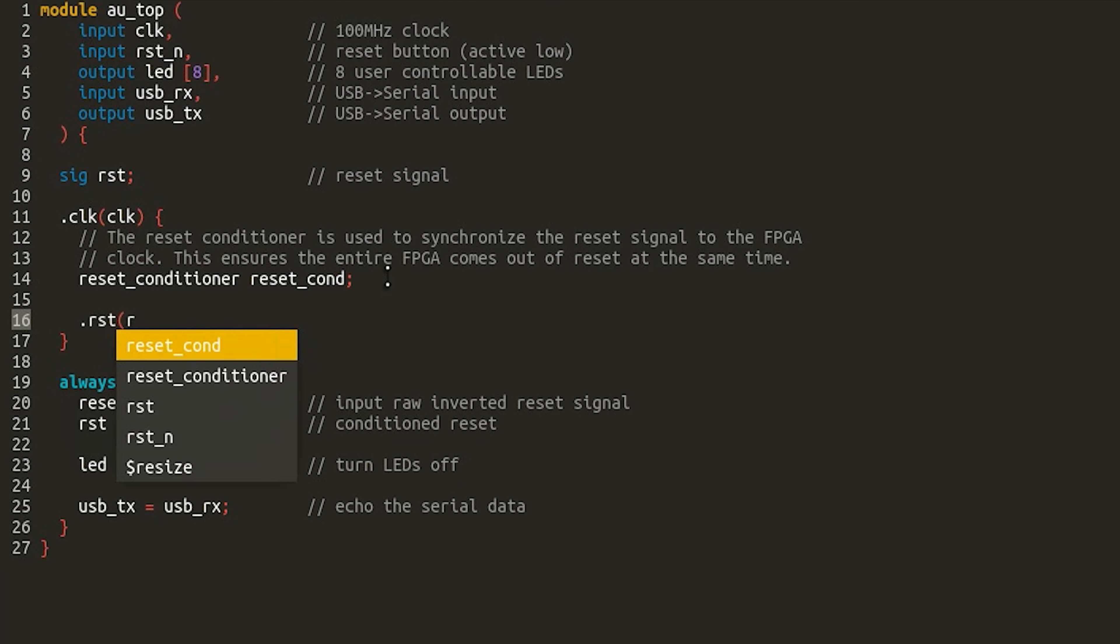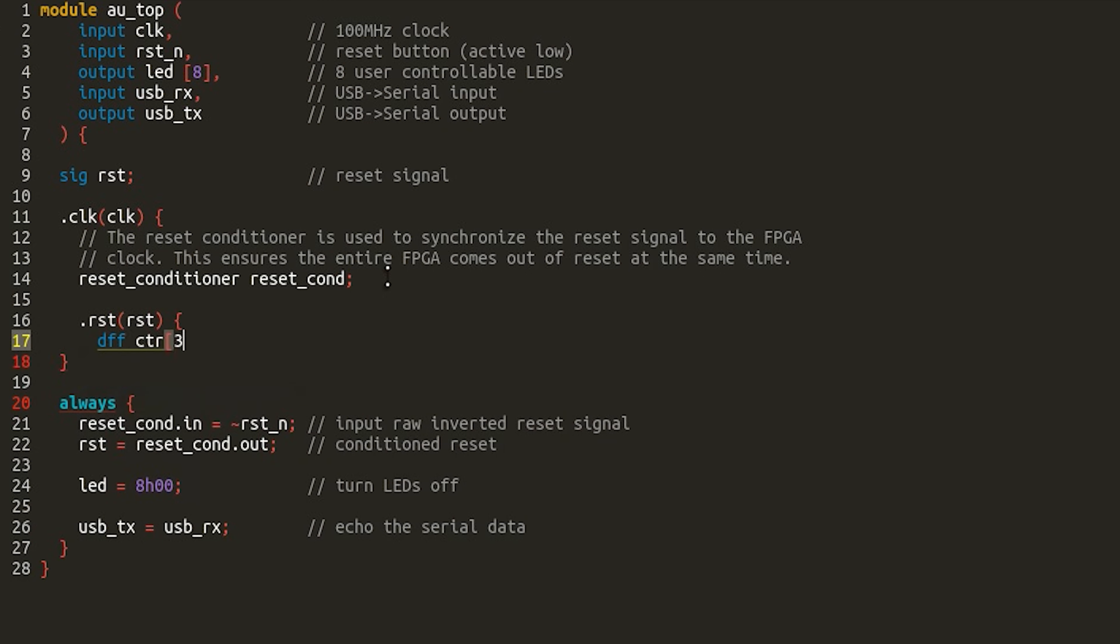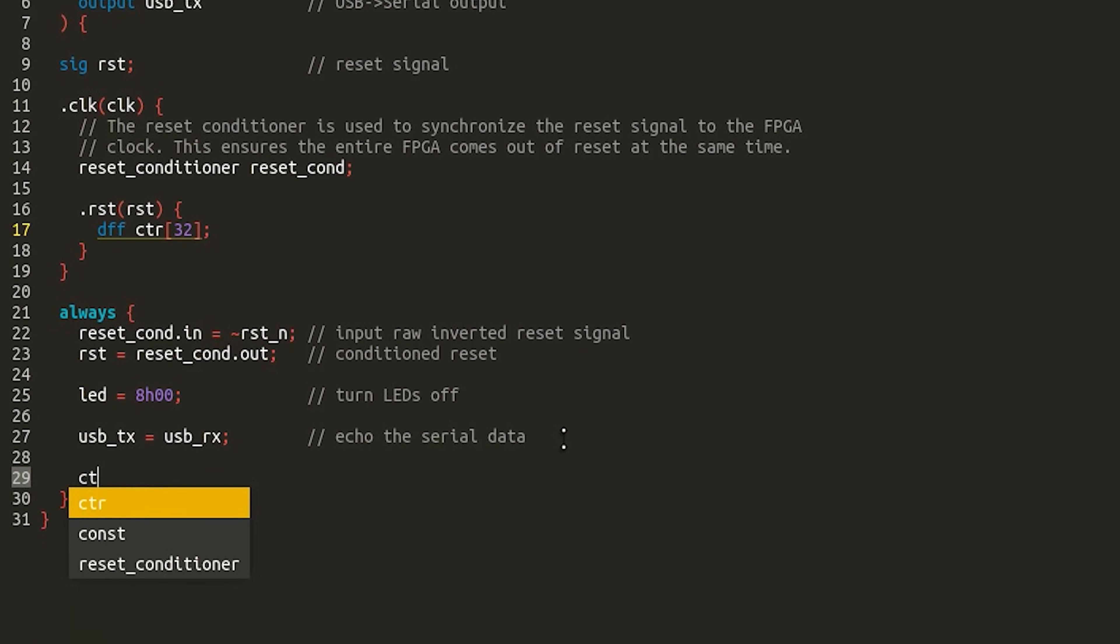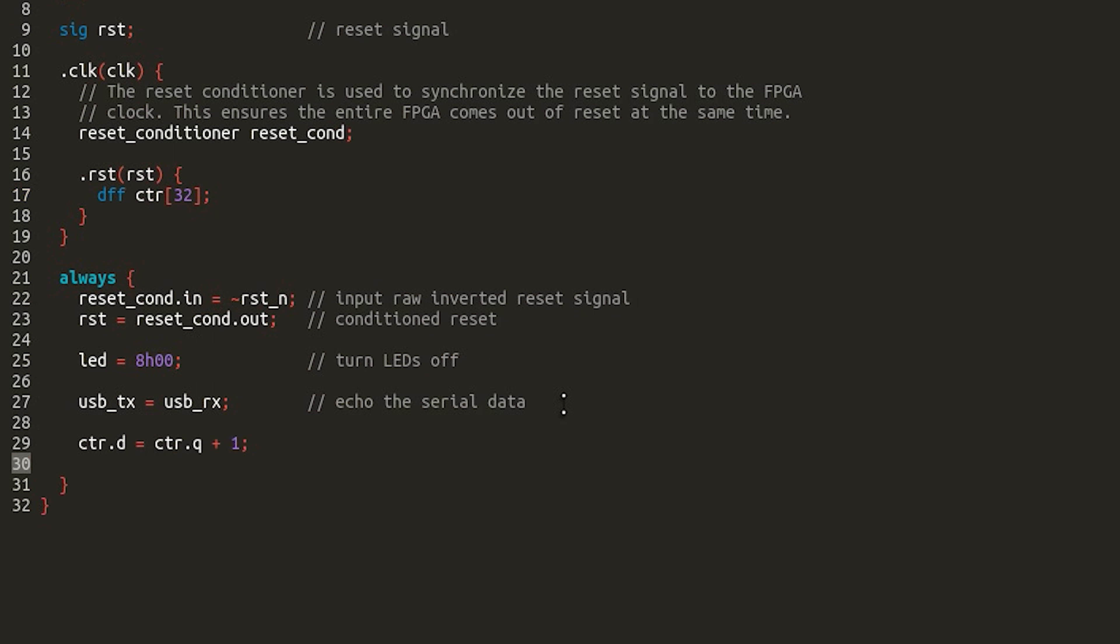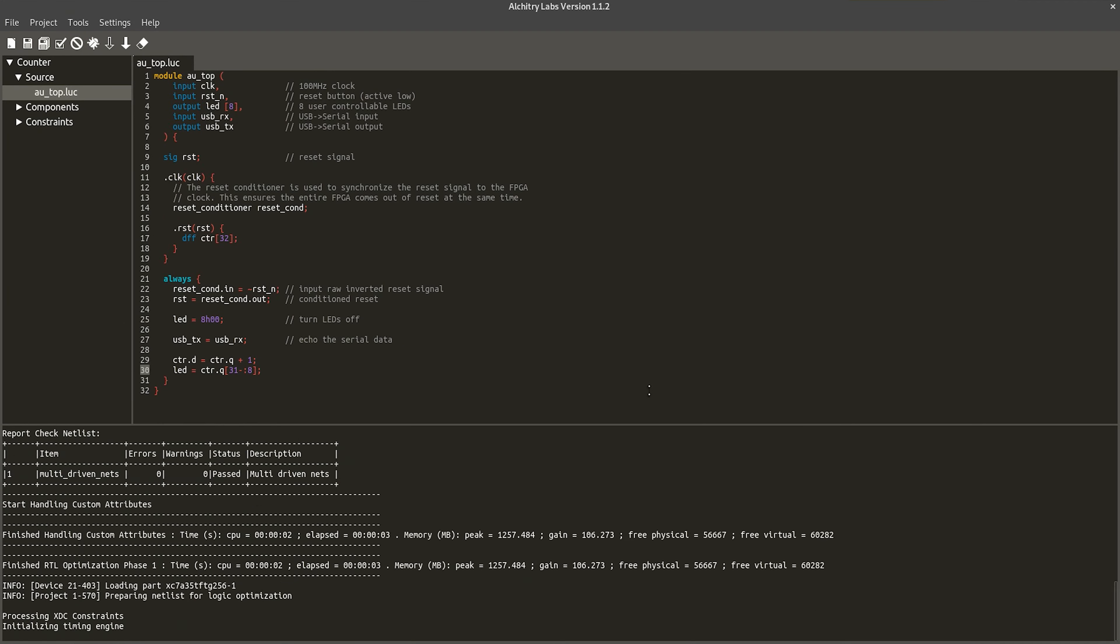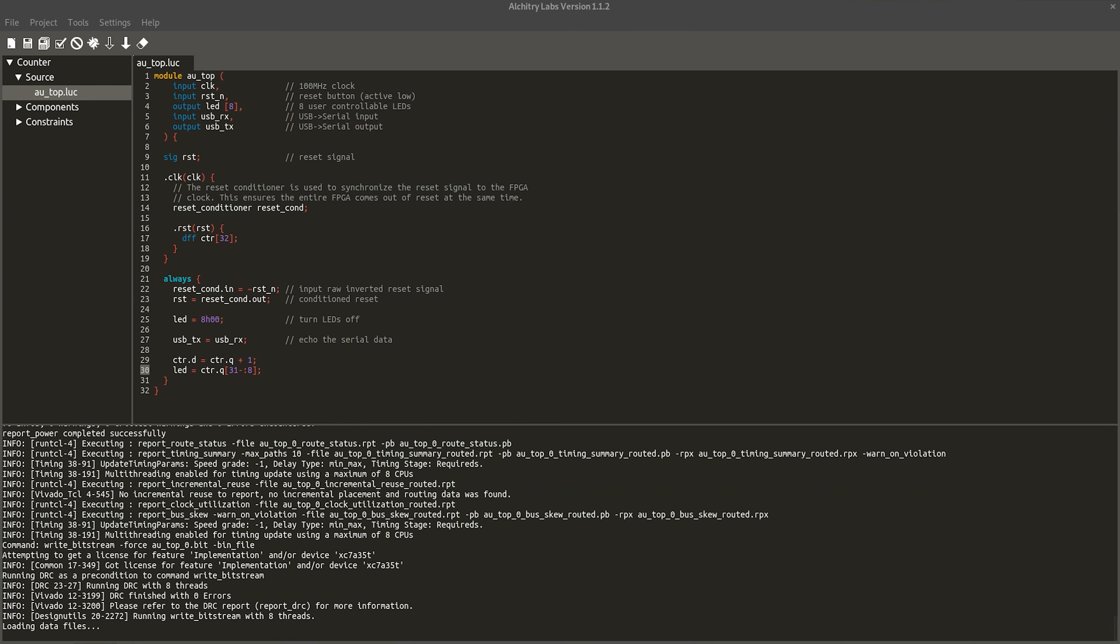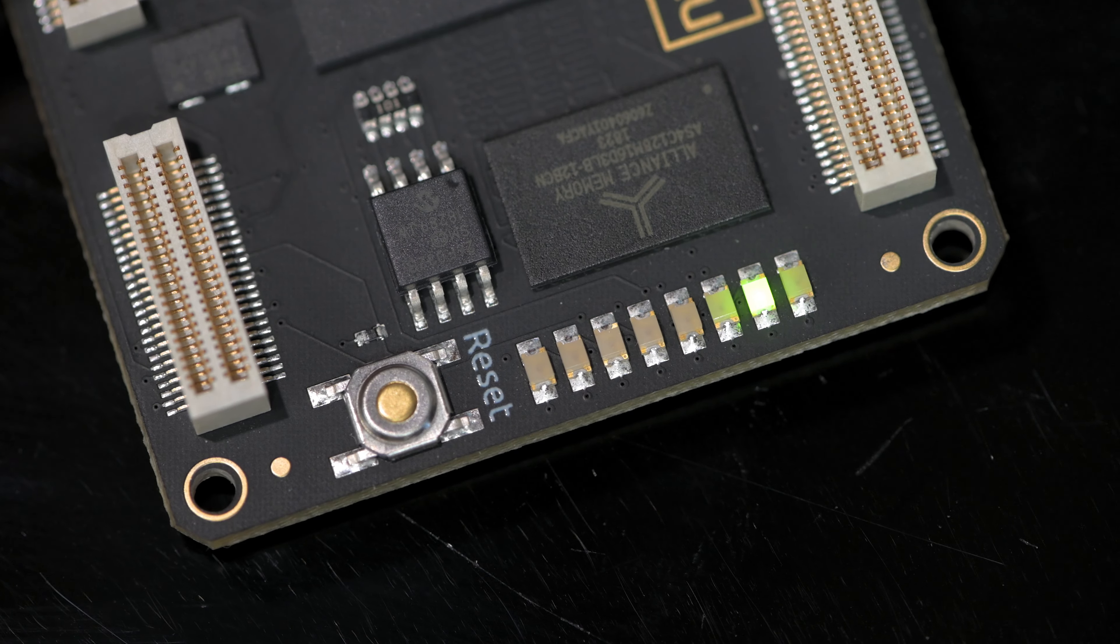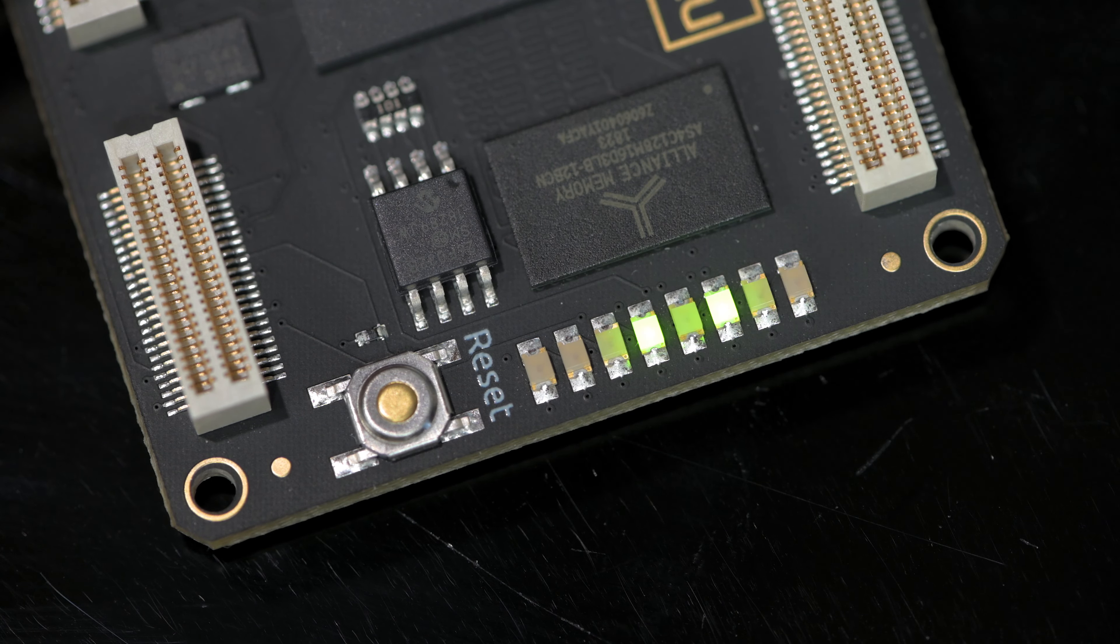In Lucid, you simply declare a DFF type with a size for an array. We will make a DFF that is 32 bits wide named CTR. By declaring it inside the clock and reset blocks, we hook up those signals to the DFF. We can connect the D input of the DFF to its Q output plus 1. Conveniently, we don't have to describe the entire adder circuit, and we can just use the plus symbol. We then can connect the top 8 bits of the DFF's Q output to the LEDs. We can then build the project. This takes a minute or two, so let's skip ahead. With the project built, we can load this onto the board, and we can see the LEDs counting as expected. If we press the reset button, it will force the value of the DFF to zero. When we release it, it resumes counting.